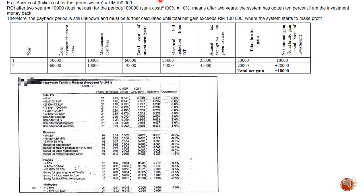Let's see an example. If your system has an initial cost — also known as sunk cost — of 100,000 Ringgit, and the return on investment after two years is 10,000, which is still not 100% of your investment. This 10,000 is the total net gain for two years. If you calculate 10,000 over 100,000 (the initial cost) times 100%, you will have 10%. This means after two years your system has got 10% return on investment.